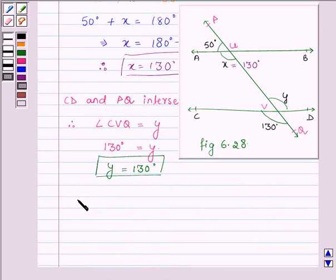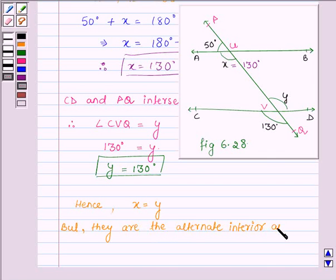Hence we have x is equal to y, but they are the alternate interior angles formed by transversal PQ with lines AB and CD, and are equal.